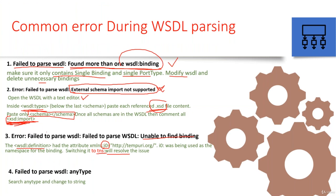Last time when we were generating the Apex class from the WSDL, we got a parsing error — something called 'any type,' and any type is not supported. Whenever you see 'any type,' simply change it to string type. Do a find-and-replace: replace 'xsd:anyType' with 'xsd:string'.